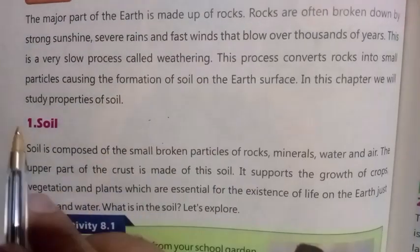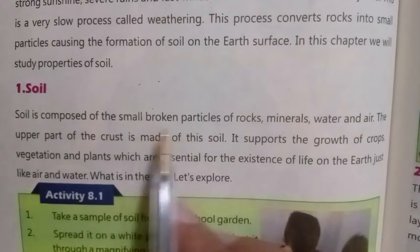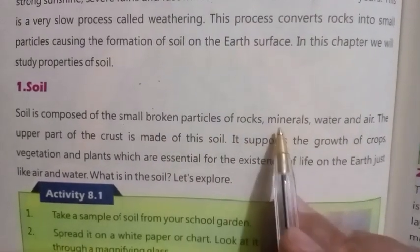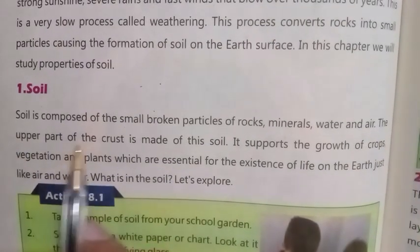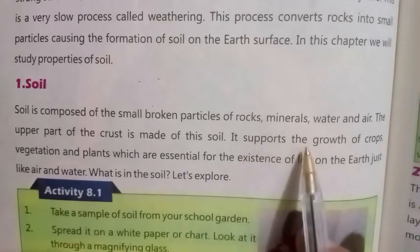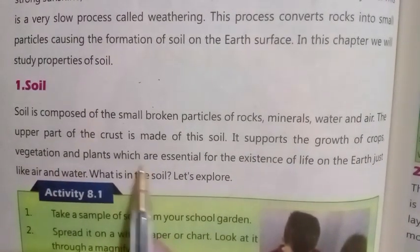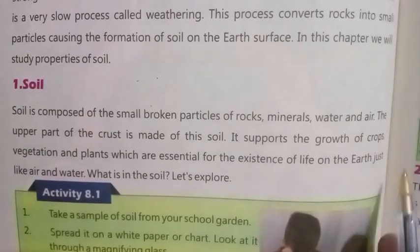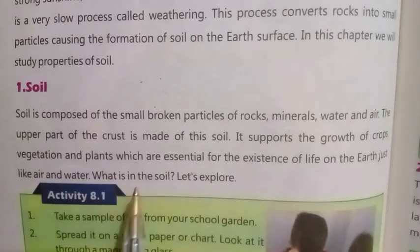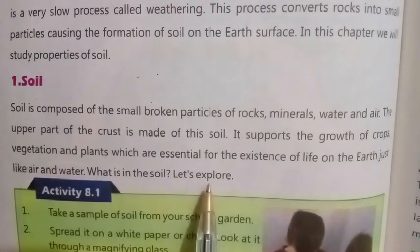Number one: Soil. Soil is composed of the small broken particles of rocks, minerals, water, and air. The upper part of the crust is made of this soil. It supports the growth of crops, vegetation, and plants, which are essential for the existence of all life on the earth, just like air and water. What is in the soil? Let's explore.